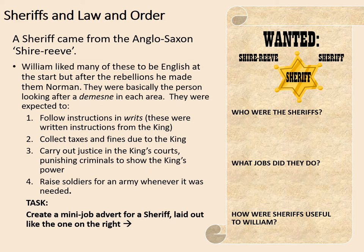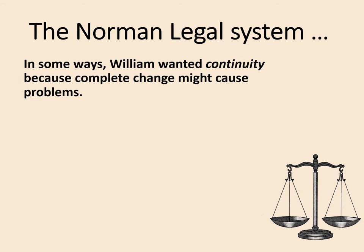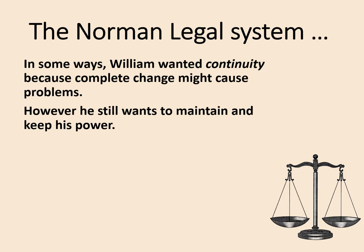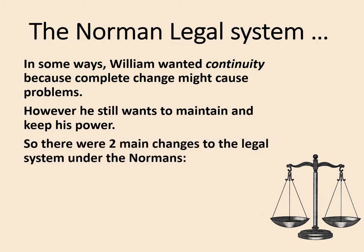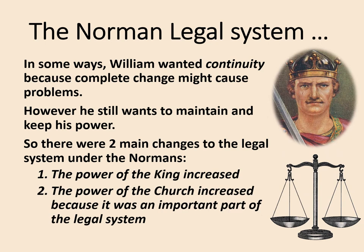Having considered the role of the Shire Reeve, we're now going to consider in more detail the Norman legal system. This did have quite a lot in common with the Anglo-Saxon system, so we need to assess the extent of continuity and change in this period. William wanted continuity because a complete change in laws might cause problems and rebellions, but he still wanted to maintain his power. There were two main changes: the power of the king vastly increased, and the power of the church increased too, as it was an important part of the legal system. Ultimately, the biggest judge in the land was not the king — it was God.